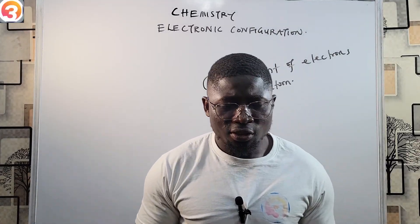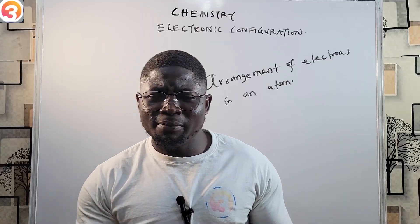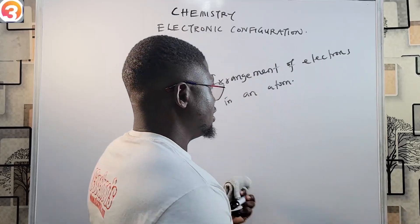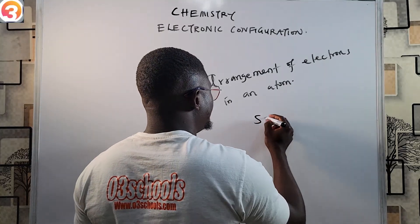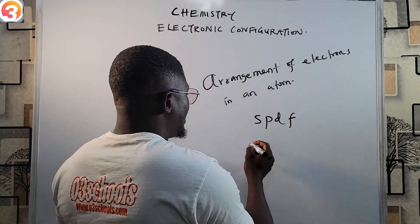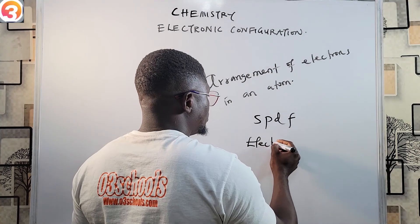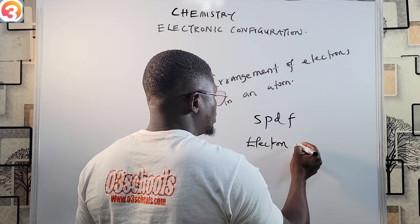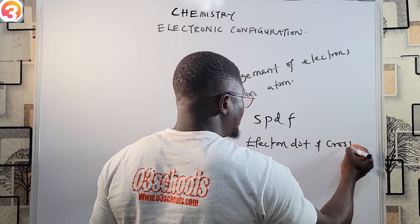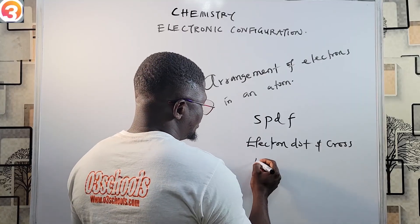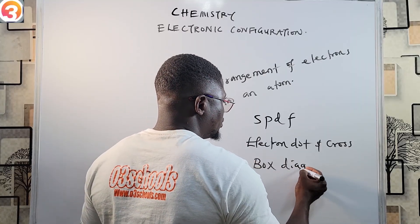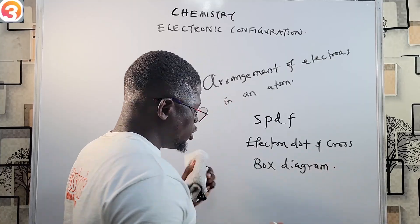There are many methods for writing electronic configuration. For example, we have the spdf method, the electron dot and cross method, and the box diagram method. These are all methods for writing electronic configuration.